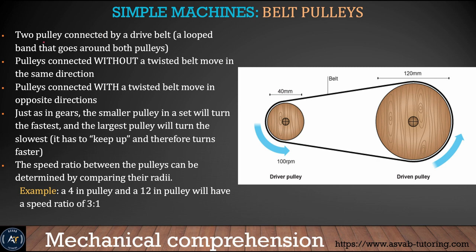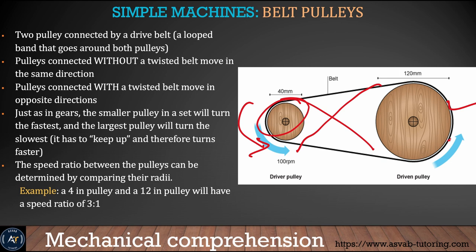Next is the belt pulley — the same concept as a pulley system. A belt pulley is two pulleys connected by a drive belt. If the pulleys are connected without a twist, the belt moves in the same direction. If connected with a twist, they rotate in opposite directions.